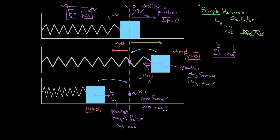To recap: objects with a restoring force that's negatively proportional to the displacement are simple harmonic oscillators. For all simple harmonic oscillators, at the equilibrium position you get the greatest speed but zero restoring force and zero acceleration. At the points of maximum displacement, you get the maximum magnitude of restoring force and acceleration but the least possible speed.